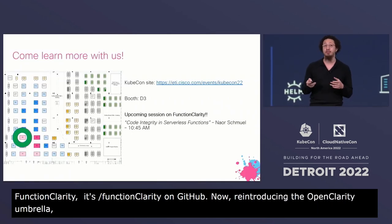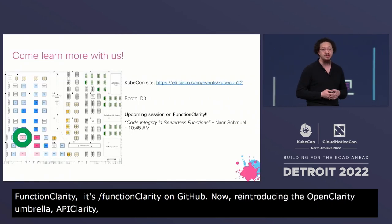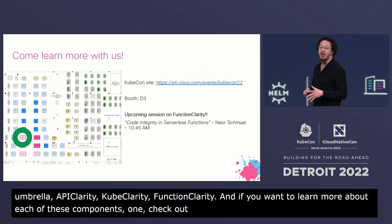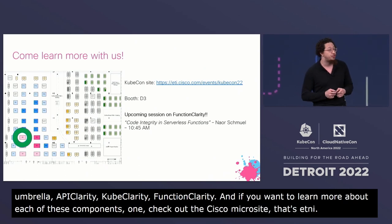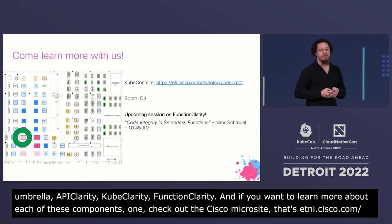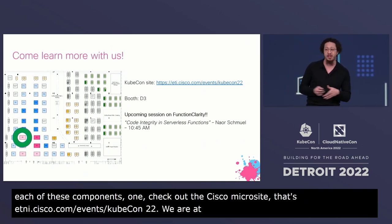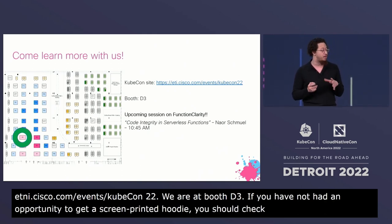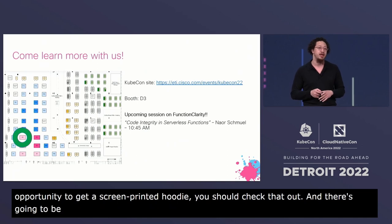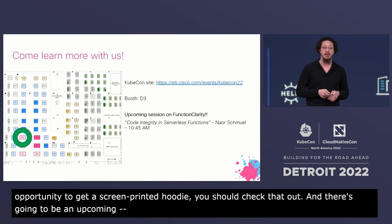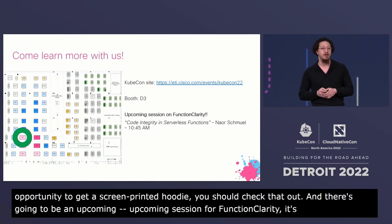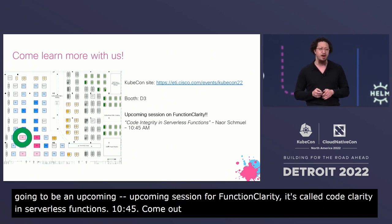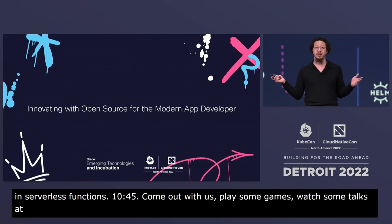If you want to learn more about each of these components, check out the Cisco microsite at etni.cisco.com/events/kubecon22. We are at booth D3 — if you haven't had a chance to get a screen-printed hoodie, check that out. There's an upcoming session for FunctionClarity called 'Code Integrity in Serverless Functions' by Naor Shmuel at 10:45. Come hang out with us, play some games, watch some talks at our booth. Thank you.